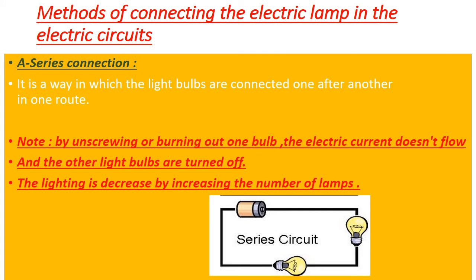There are two methods of connecting electric lamps in an electric circuit. Number one, series connection, in which the light bulbs are connected one after another in one route. In series connection, by increasing the number of light bulbs, the light intensity of the bulbs decreases. There is one route in series connection, so if one bulb burns or is damaged, the electric current doesn't flow and the other light bulbs turn off.